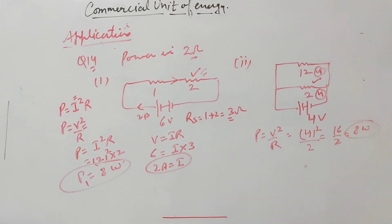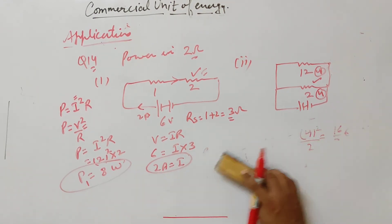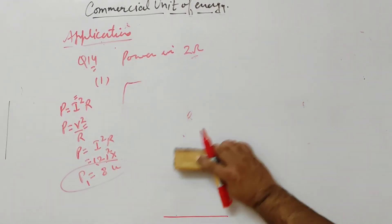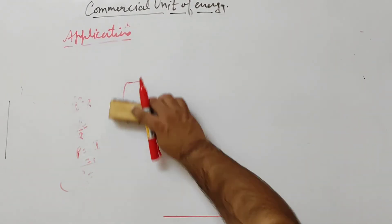Power P1 is 8 watts, P2 is 8 watts. Comparison means ratio 8 by 8, that is 1 ratio 1. So the power ratio is 1:1. This question is very important. In the exam, this type of question comes.